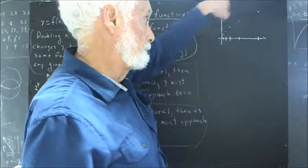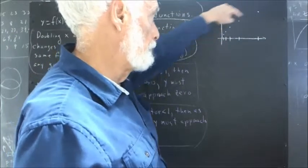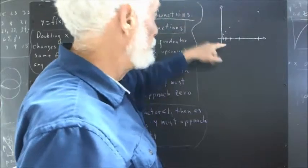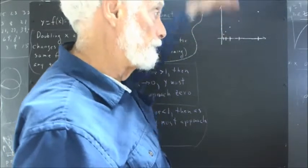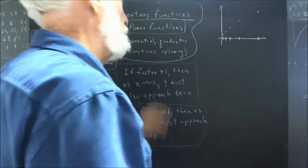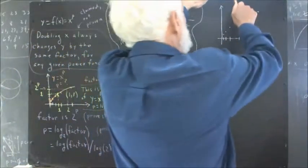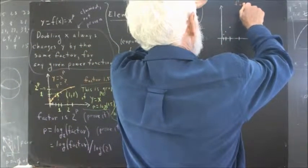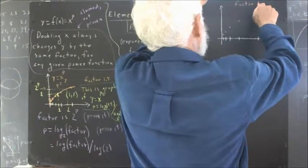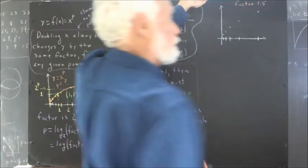But you can look at these points and verify for yourself that it's at least plausible that every time x doubles, y increases by a factor of 1.5. So this is a graph for factor 1.5.